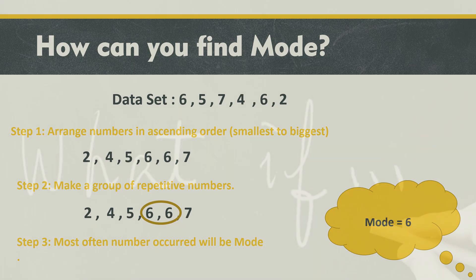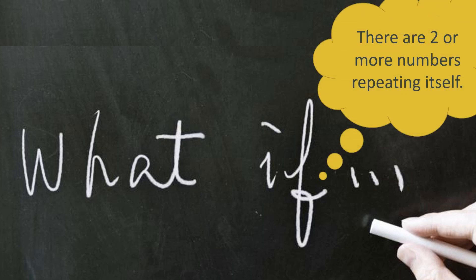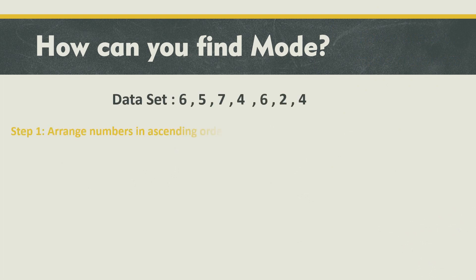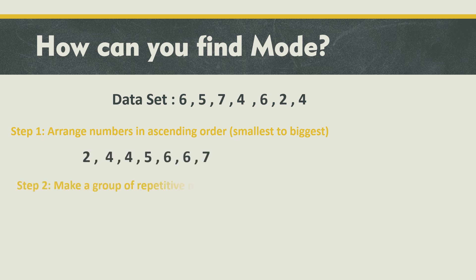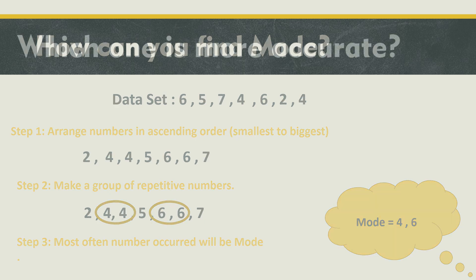But what if there are two or more numbers repeating? Arrange them first, then make groups of repetitive numbers. If there are two numbers repeating equally, the data set has two modes — for example, 4 and 6. But if any number appears three times versus another appearing twice, then that number occurring most often will be the mode.